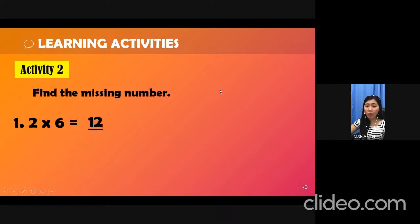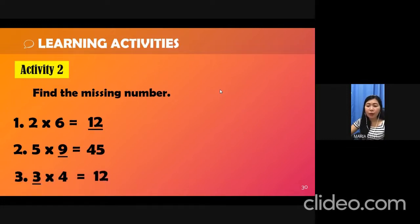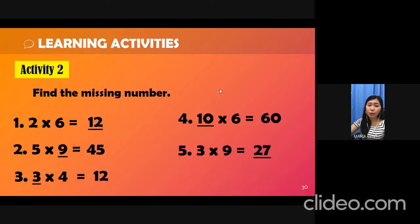For number 1, 2 times 6, the missing number is 12. Number 2, 5 times 9 is equal to 45. Our missing number is 9. Number 3, 3 times 4 is equal to 12. The missing number is 3. Number 4, 10 times 6 is equal to 60. The missing number is 10. Number 5, 3 times 9 is equal to 27. The missing number is 27. Very good! You all got a perfect score.